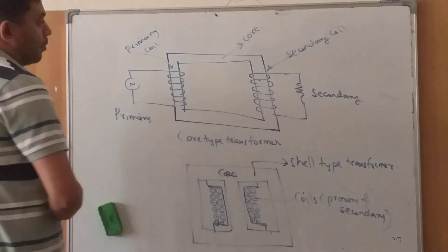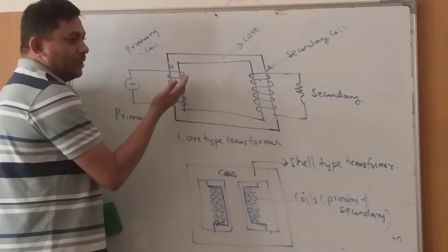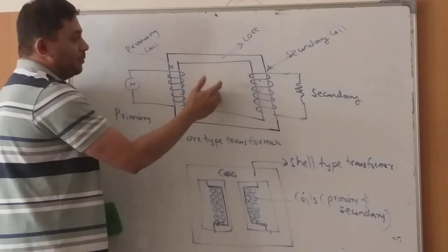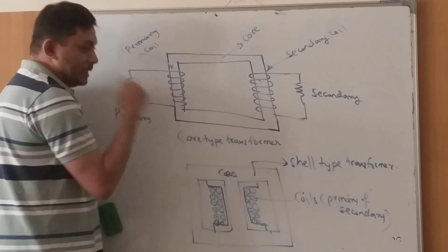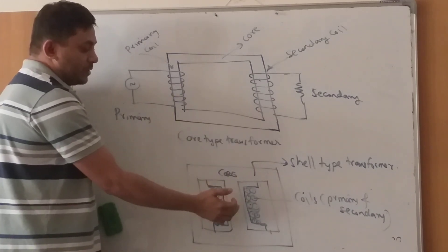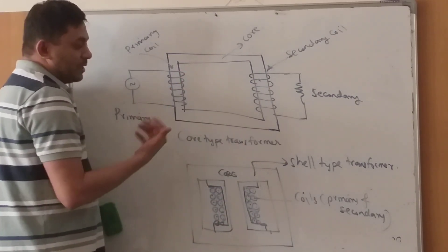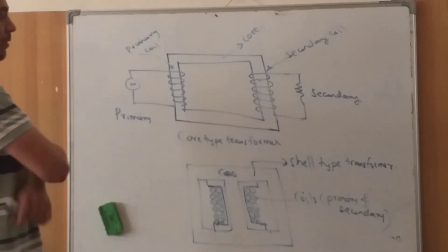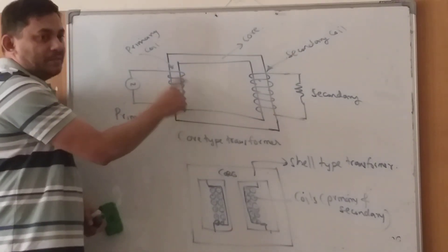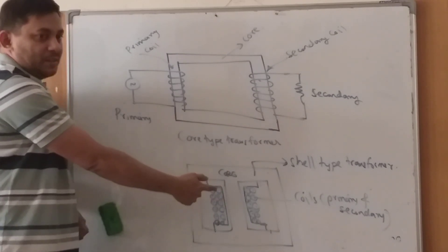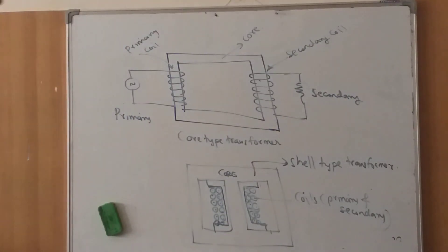In the case of core type transformers — used for high-rated, high-power applications — the transformer is made in the form of a particular core where the coils are located on the outer periphery and the middle is the core. So you can see and touch the coils directly. In terms of fabrication, the shell type is much easier to manufacture, whereas the core type presents some practical difficulties.